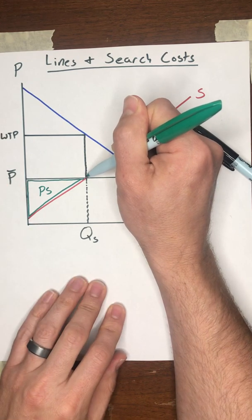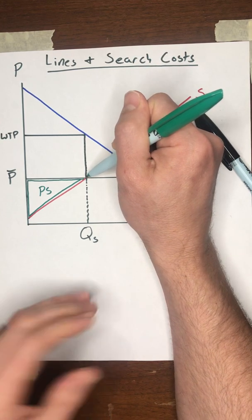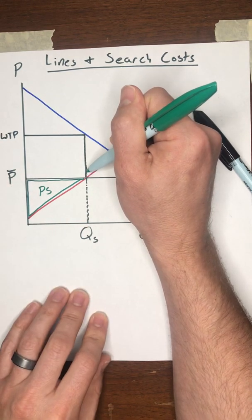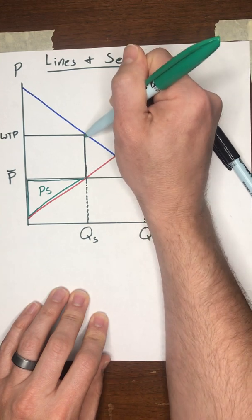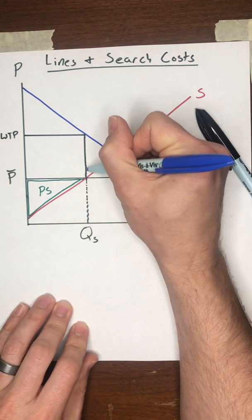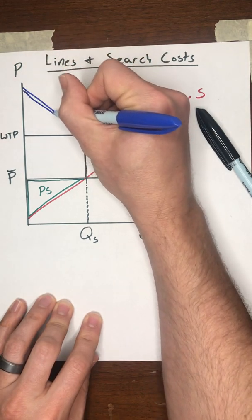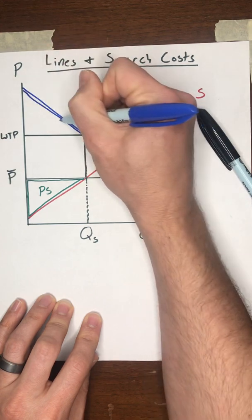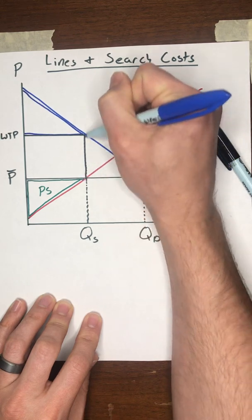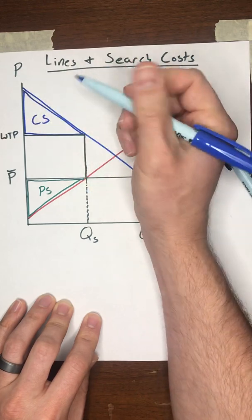But they're also paying a time price, an amount, whatever their value is per hour of time, or however much time they spend waiting in line to get a unit. The value of that time is going to be represented by this line segment here. So when you take the price they're paying the seller plus the value of their time, their consumer surplus is going to be the difference between their maximum willingness to pay along that demand curve and the total price that they're actually paying, the monetary price plus the time price to the sellers. And you end up with this as the consumer surplus.